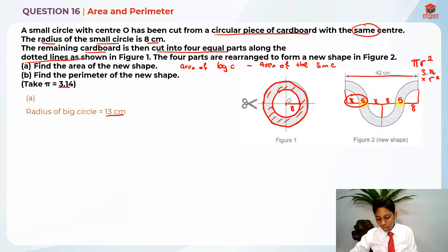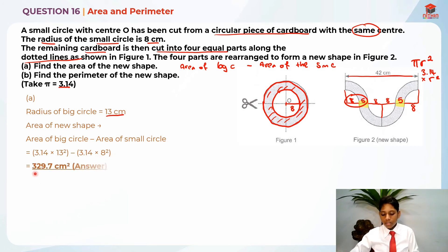So now that we know that the area of the new shape is basically area of big circle minus the area of small circle. So we can do that. So this is the area of the big circle, 3.14 times 13 square minus area of small circle, which is 3.14 times 8 square, which will give us the answer of 329.7 cm square.